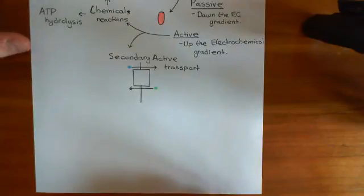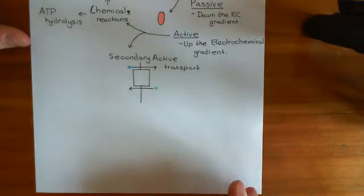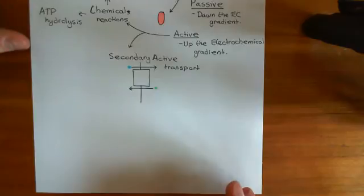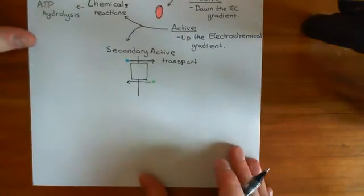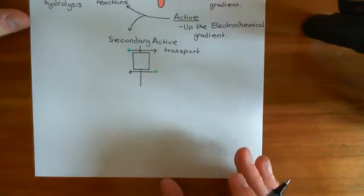All of the ATP binding cassette transporters are going to be primary active transporters. They are going to use ATP hydrolysis to move solute molecules up their electrochemical gradients. Let's now talk about the 49 different ABC transporters.